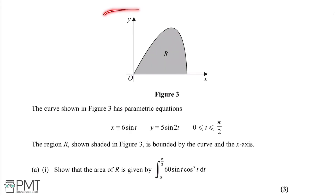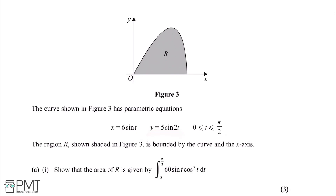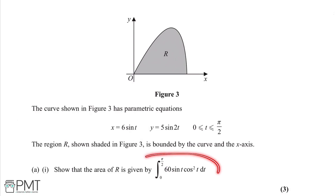In this question we're given figure 3, which shows a curve with parametric equations x = 6 sin(t) and y = 5 sin(2t), for values of t between 0 and π/2. The region R, shown shaded in figure 3, is bounded by the curve and the x-axis. We're asked to show that the area of R is given by a specific integral.